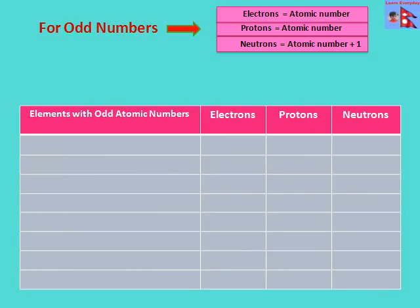Now for the elements having odd atomic numbers: the number of electrons and number of protons are equal to the atomic number of the element, but the number of neutrons will be equal to the atomic number plus one. Here we go for the different elements — in lithium: 3 electrons, 3 protons, but 4 neutrons.